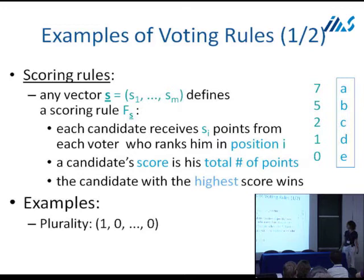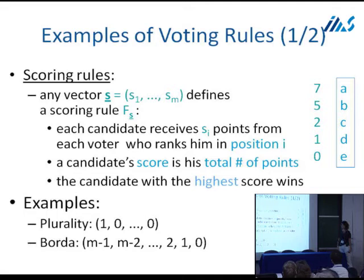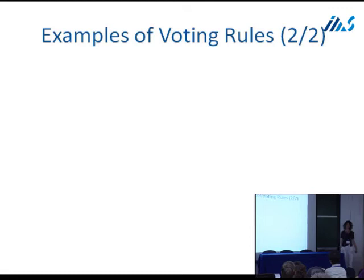Some examples of scoring rules: the classic voting rule where you vote for one candidate is plurality, corresponding to the scoring vector 1, 0, 0, 0. Borda rule is another classic scoring rule - it goes from M minus 1 down to 0 step by step: M minus 1, M minus 2, ..., 1, 0. These are some scoring rules, but not all voting rules are like that.